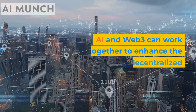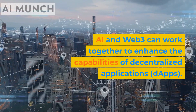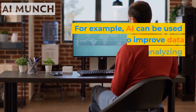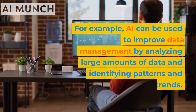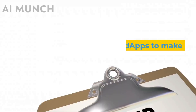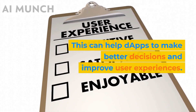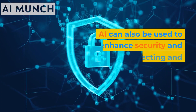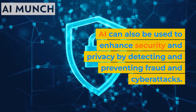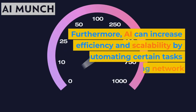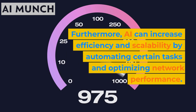AI and Web3 can work together to enhance the capabilities of decentralized applications. For example, AI can be used to improve data management by analyzing large amounts of data and identifying patterns and trends. This can help dApps to make better decisions and improve user experiences. AI can also enhance security and privacy by detecting and preventing fraud and cyberattacks. Furthermore, AI can increase efficiency and scalability by automating certain tasks and optimizing network performance.